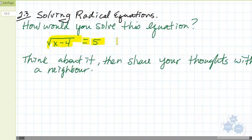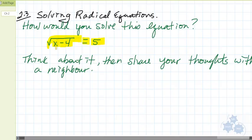First of all, when I'm asking you to solve an equation, you have one variable that you're trying to solve for. We're trying to solve for the unknown quantity here, x. I asked you to think about that and share your thoughts with your neighbor. So really quickly, anyone want to volunteer how you went about finding the value for x?